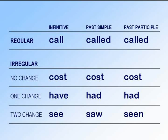And the last family, the third family, are the two-change irregular verbs, where the infinitive, the past simple and the past participle are all different. Repeat: see, saw, seen.